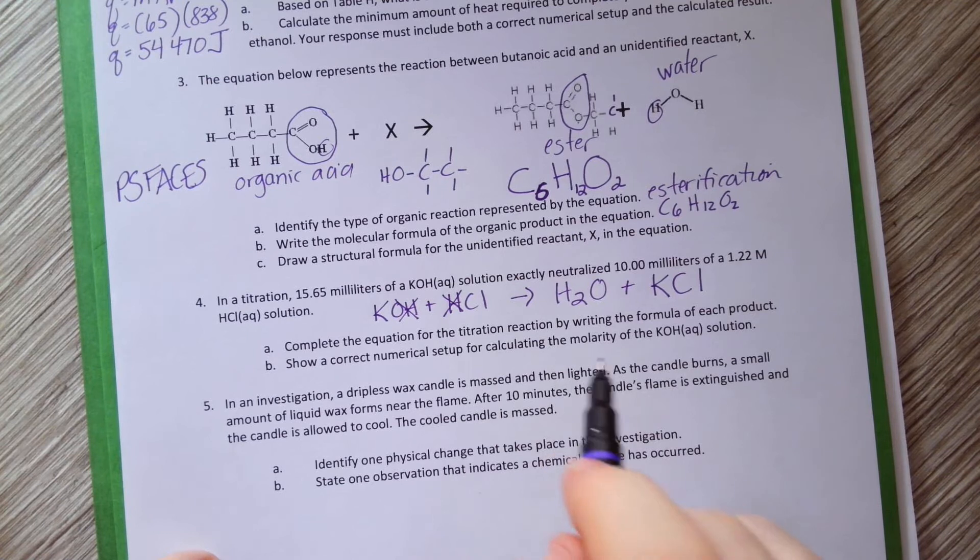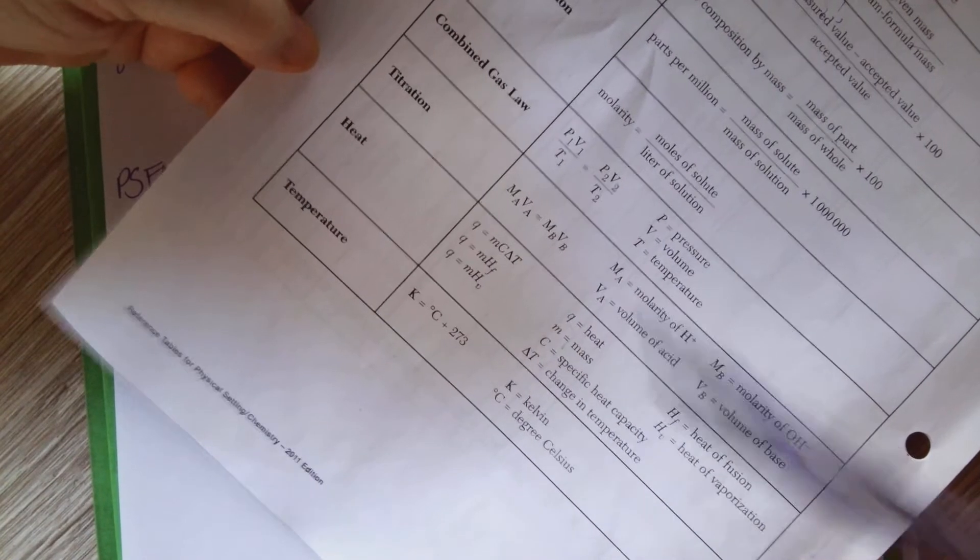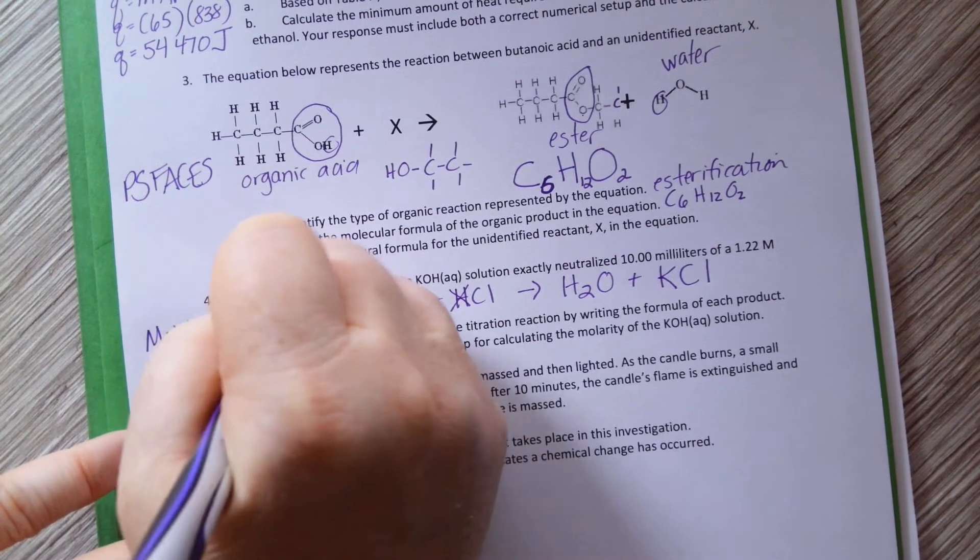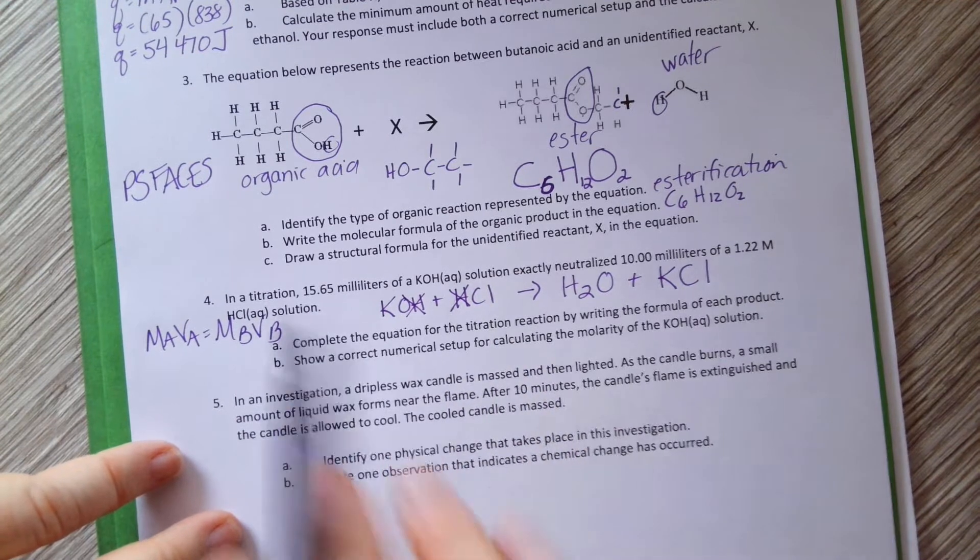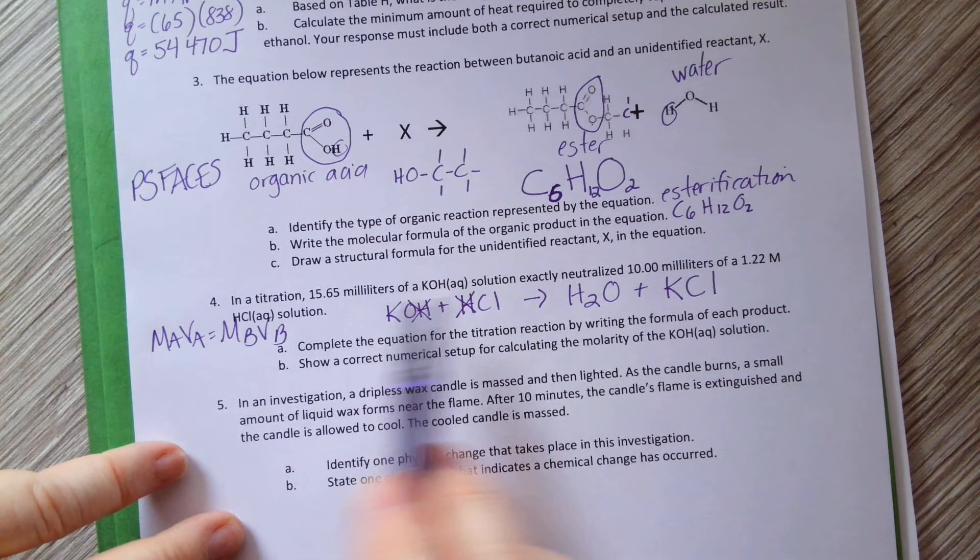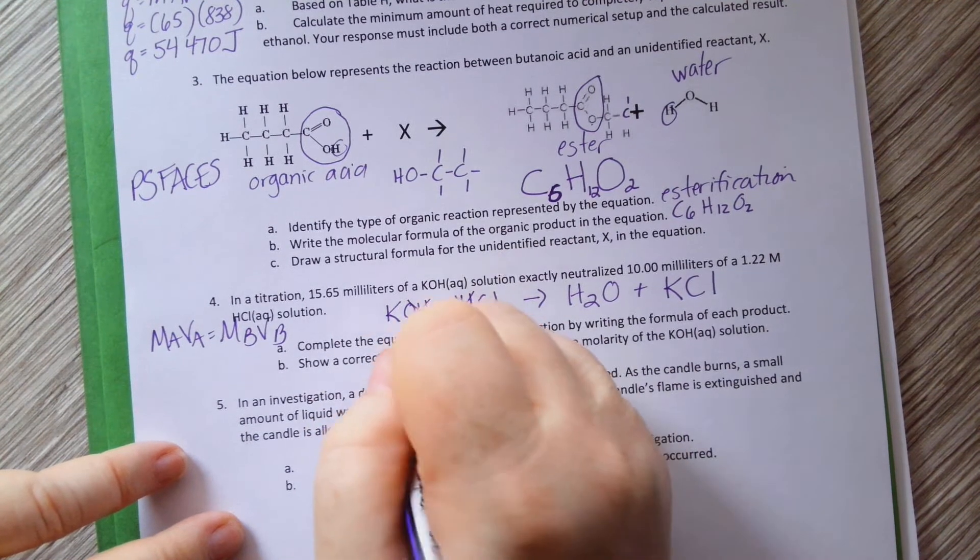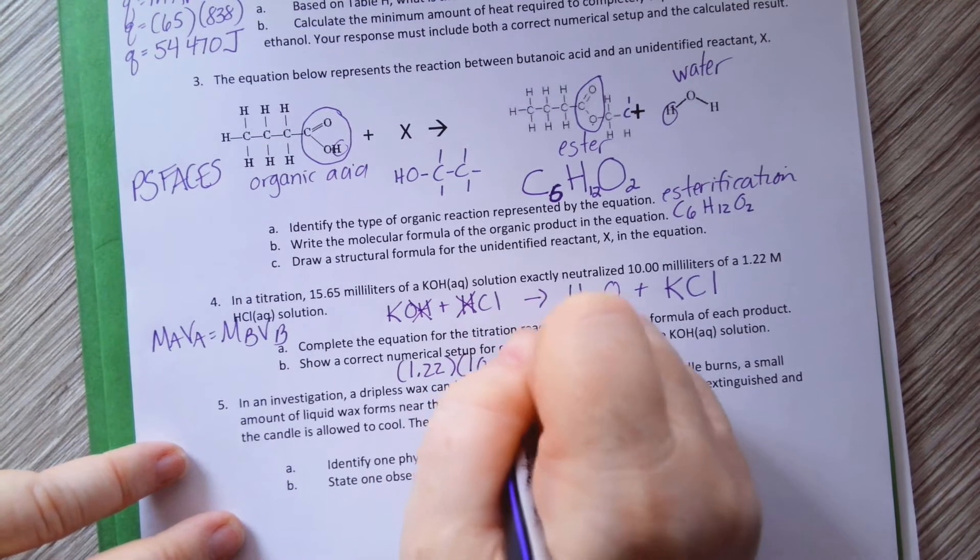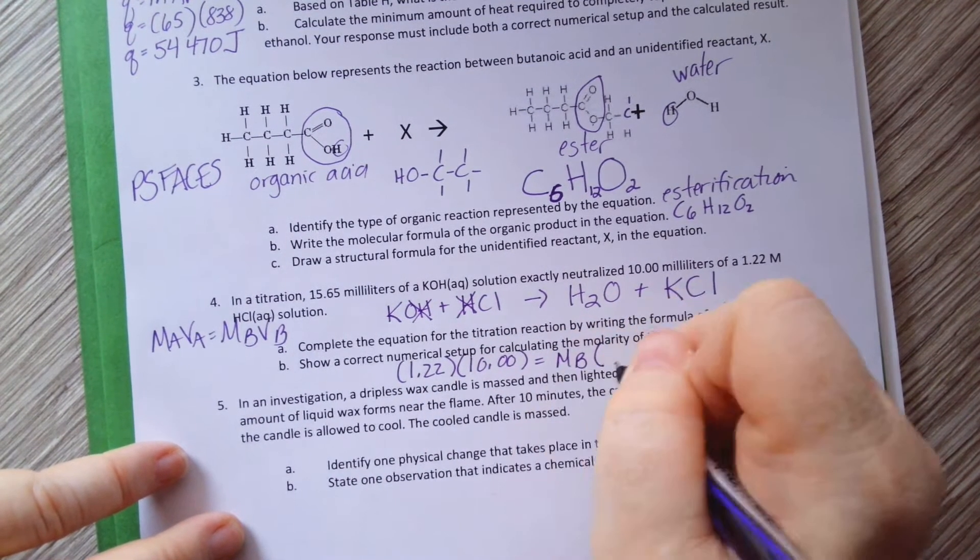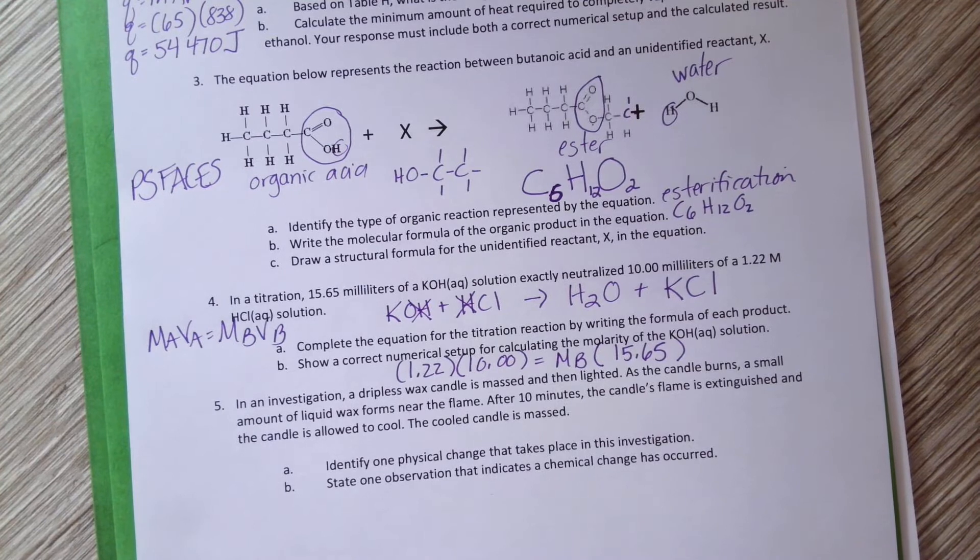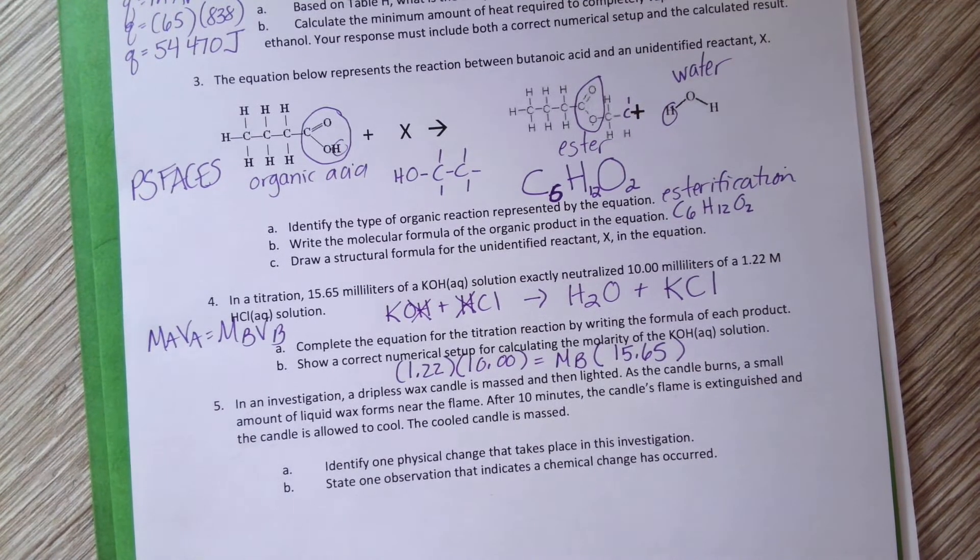Show a correct numerical setup for calculating the molarity of the KOH solution. We use titration equation. So that is MAVA equals MBVB. Since they both have one OH and one H, it doesn't get more complicated. So what do I know? I know I have this amount of base, this amount of acid, and that molarity of acid. So molarity of the acid is 1.22. The volume is 10.00. The molarity of the base is what I'm trying to find, and the volume of the base is 15.65. And that's it. Stop, stop, stop. Do not calculate. If it just says show a correct numerical setup, stop there. Done.